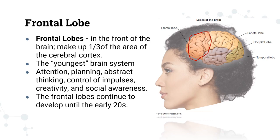If a person has a problem in the frontal lobe, he or she is most likely to engage in antisocial behavior — and in psychology, antisocial means performing behavior that violates the rights of others. The frontal lobe continues to develop until the early 20s, which explains why many children and teenagers engage in risky behaviors without thinking about consequences, because the frontal lobe matures during the early 20s.